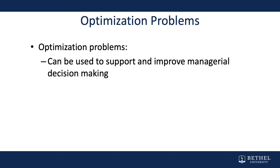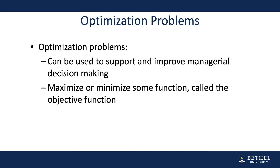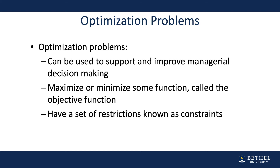Optimization problems can be used to support and improve managerial decision-making. When you have an optimization problem, you're either going to maximize or minimize some type of function, which we'll call the objective function, and we're going to have a set of restrictions — we'll call those constraints. An optimization problem can be linear or it can be non-linear.